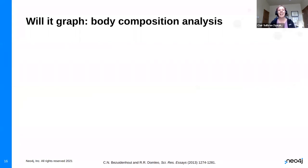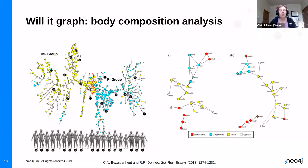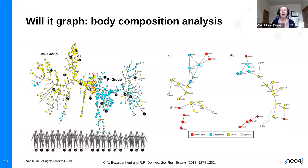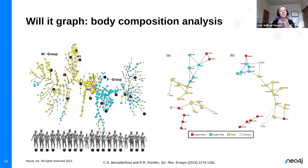Body composition analysis — will it graph? Absolutely — I didn't know that until preparing these slides. Different body shapes are broken down looking at things like upper limbs, lower limbs, and the torso. With all this information, you can see a distinct difference — you could draw a red line to separate which body compositions tend to be associated with a male versus female body type. Those separate out rather nicely.